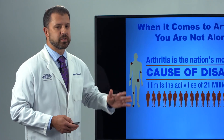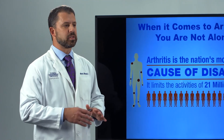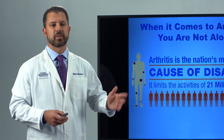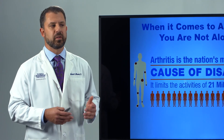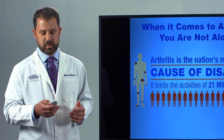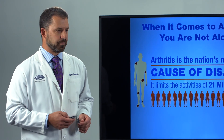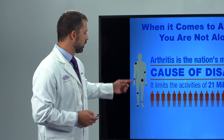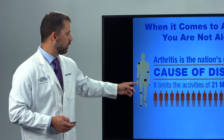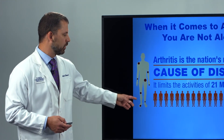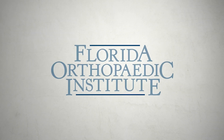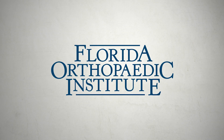When it comes to arthritis, it's so common that it's the most common cause of disability in the United States — roughly 21 million Americans estimated. There's this picture here: we're talking not just knees, we're talking shoulders, elbow, hip, wrist, ankle, feet. So it's common, and it affects all different body parts. But here we're just focusing on the knee.